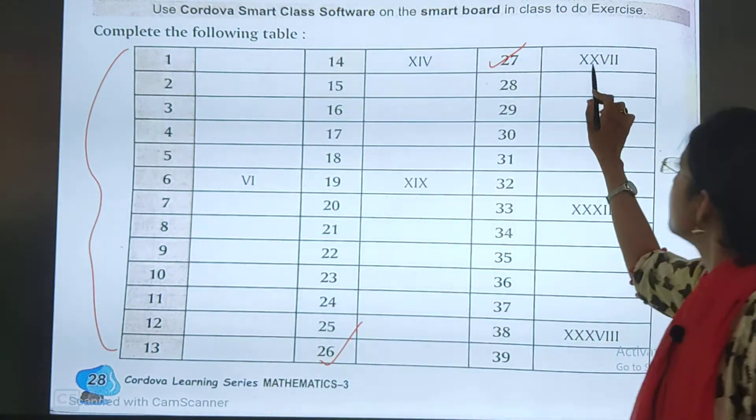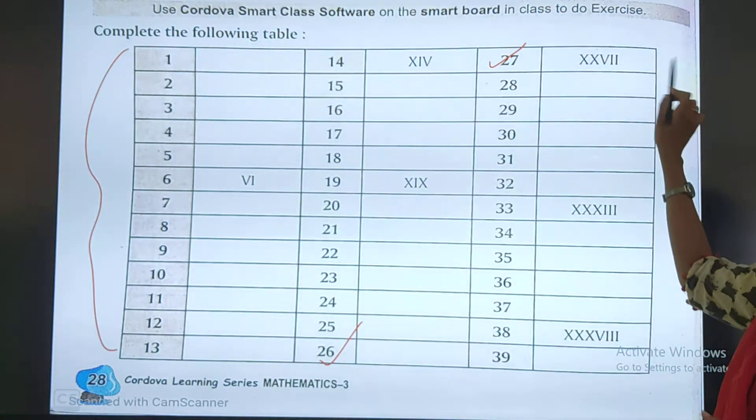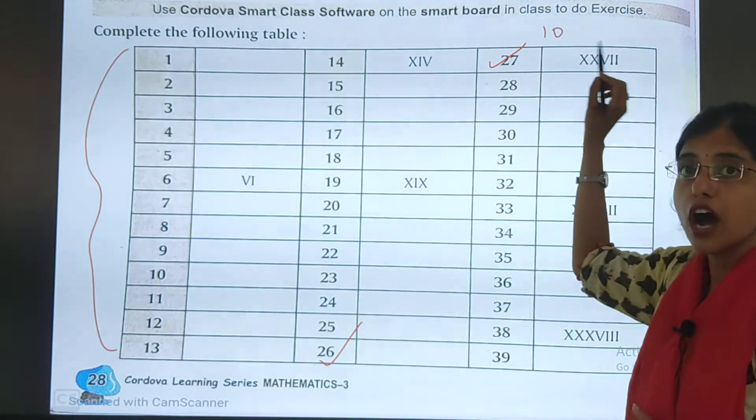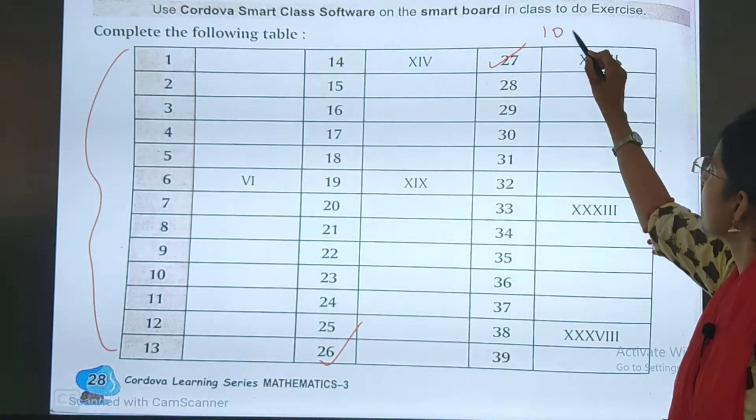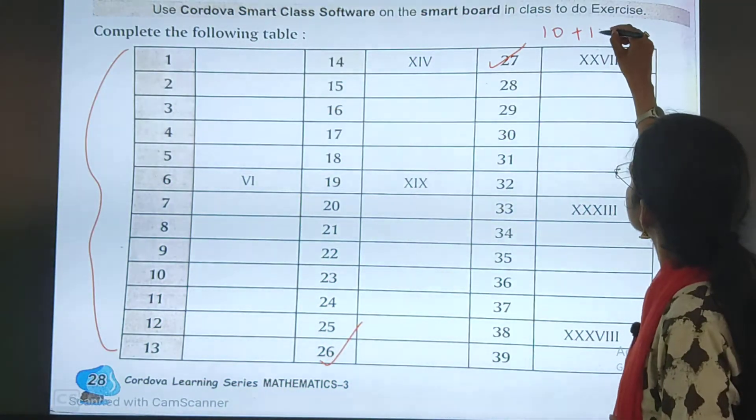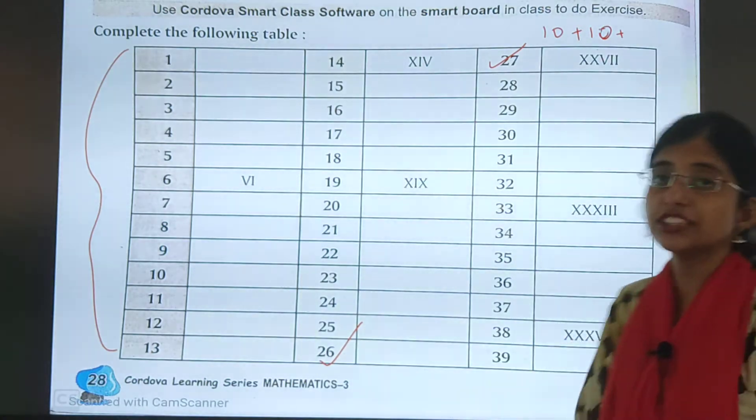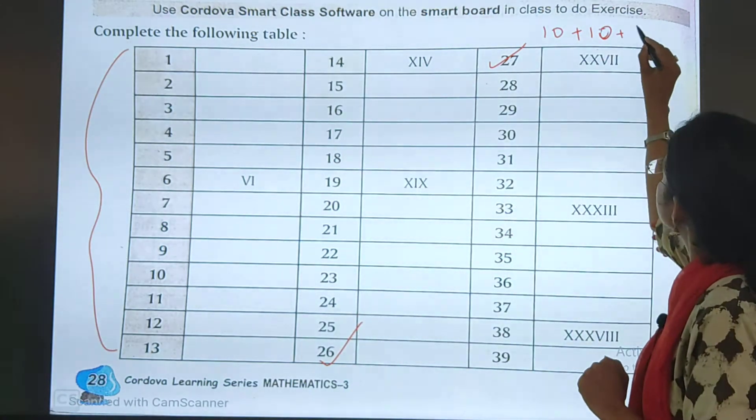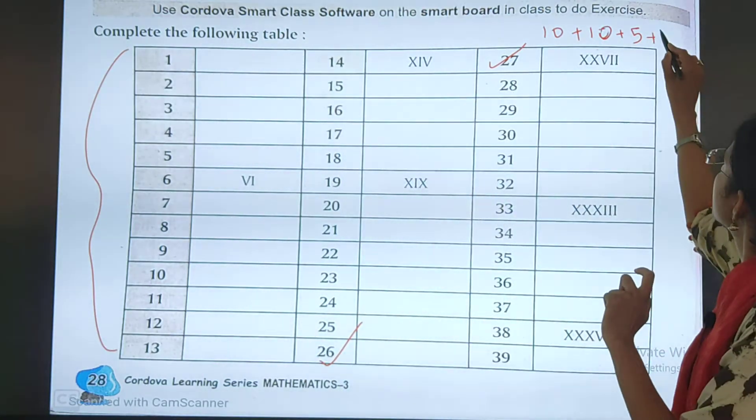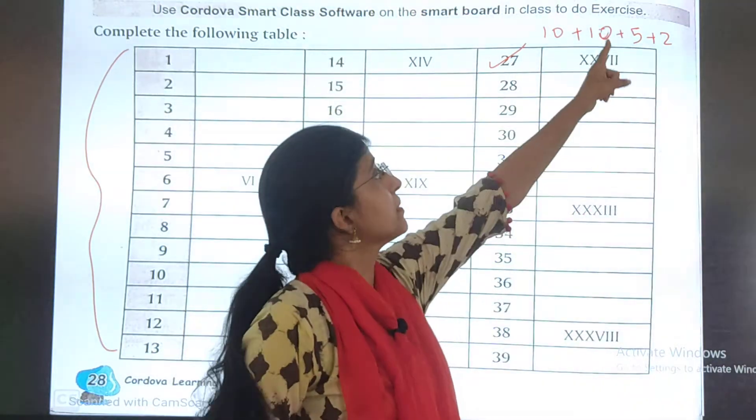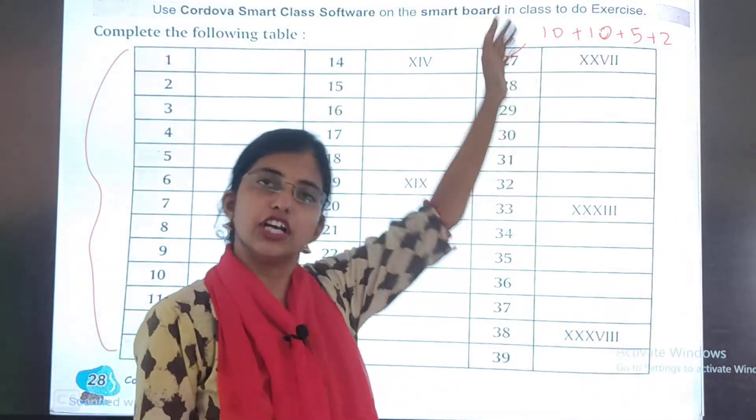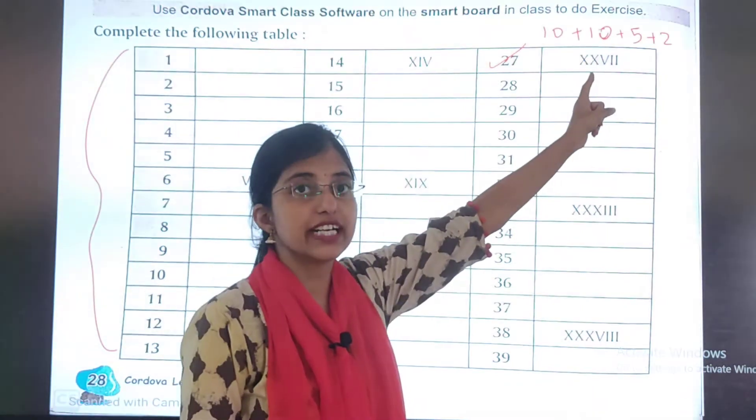The first one is done for you. Double X, V, I, I. X stands for 10. See, I am explaining you why we have written this. X stands for 10, so 10 plus 10. Plus V. V stands for 5, so plus 5. I, I stands for 2. So 10 plus 10 is 20. 20 plus 5 is 25. 25 plus 2 is 27. So this is why 27 is represented like this.